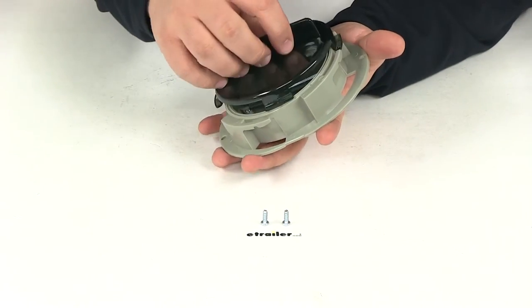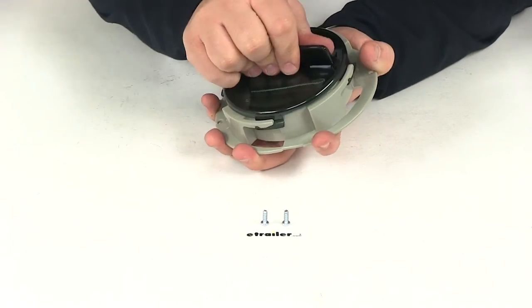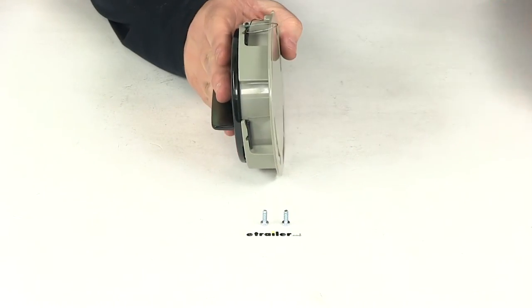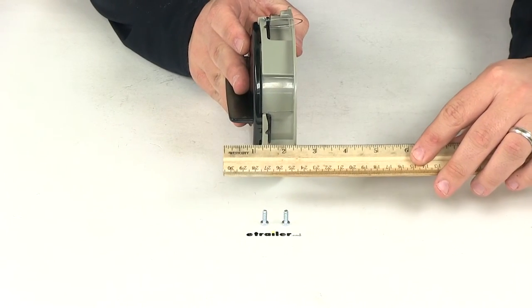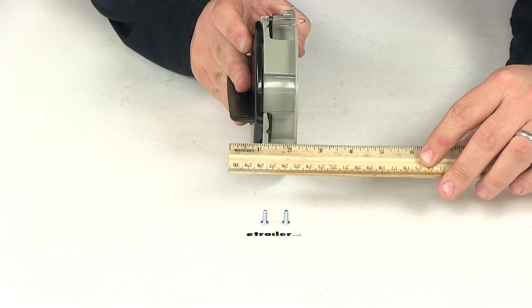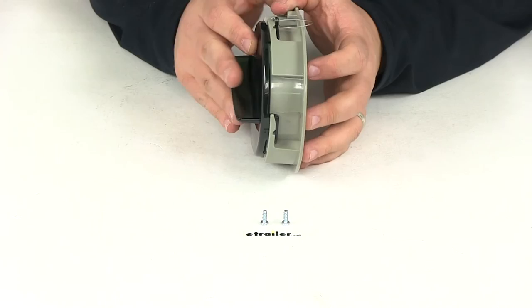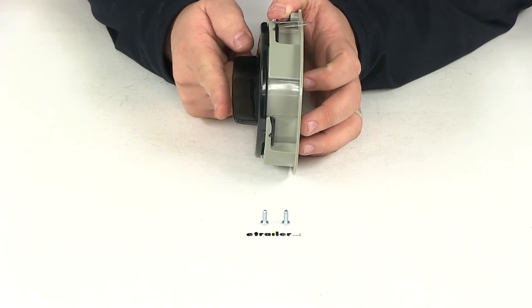And then if we take a measurement of the overall depth, which is simply just the amount of space that is going to stick out from the surface that we have it mounted to, that's going to give us a measurement of right at two and one quarter of an inch, measuring from this point here out to the outermost point of the handle.